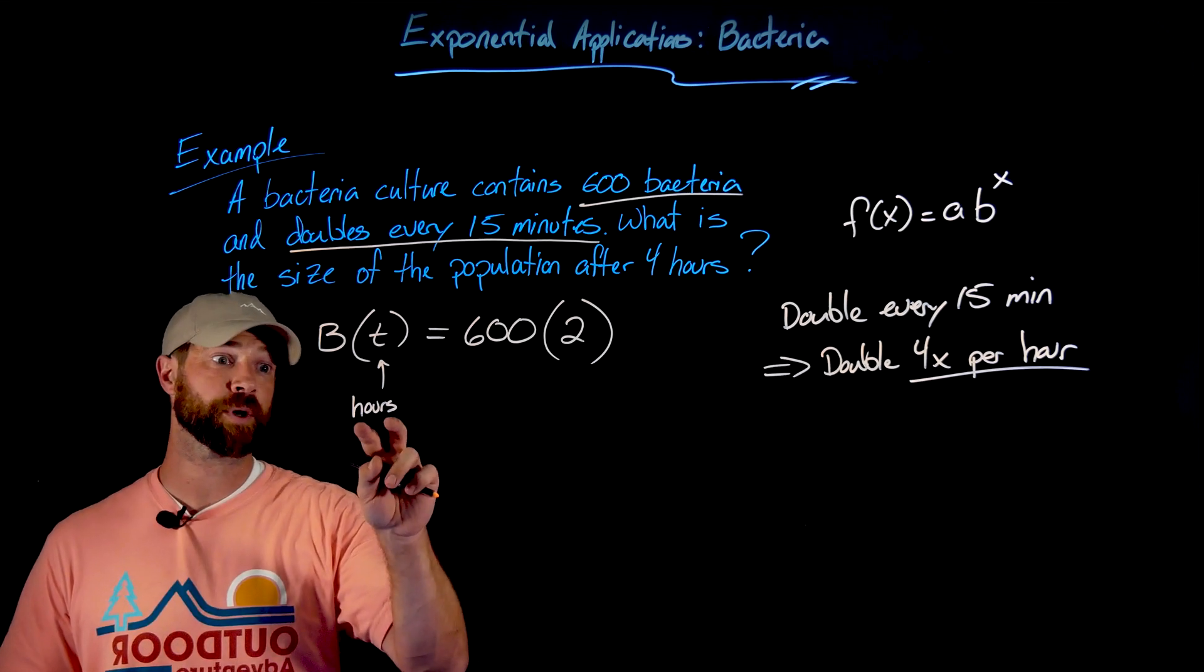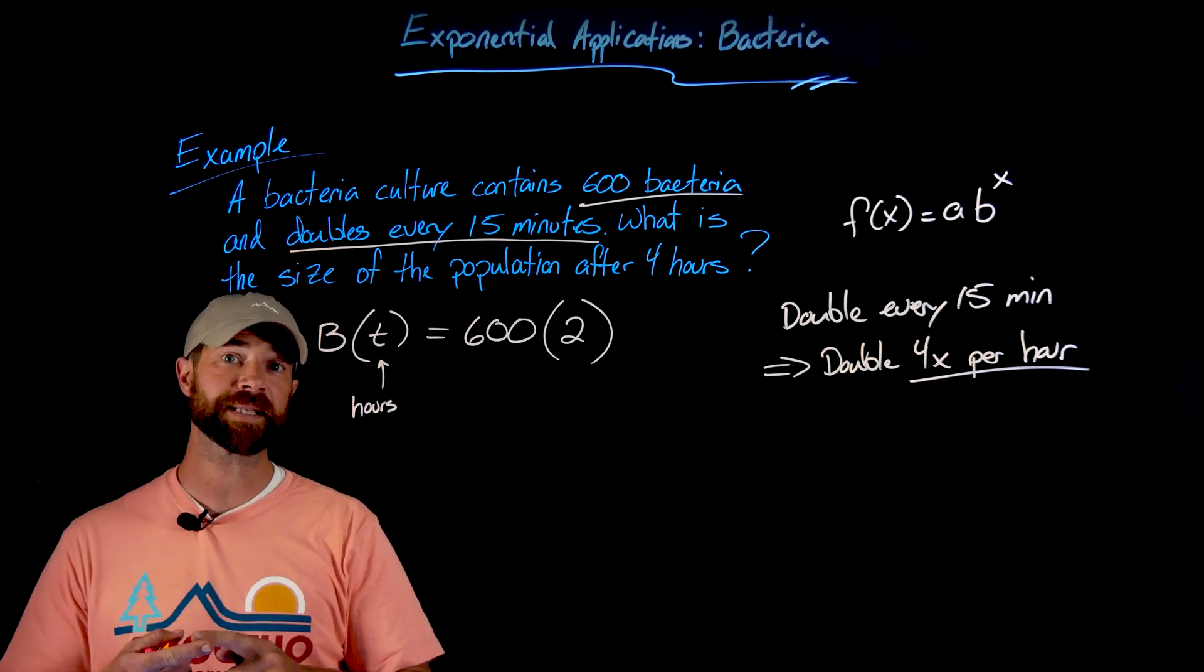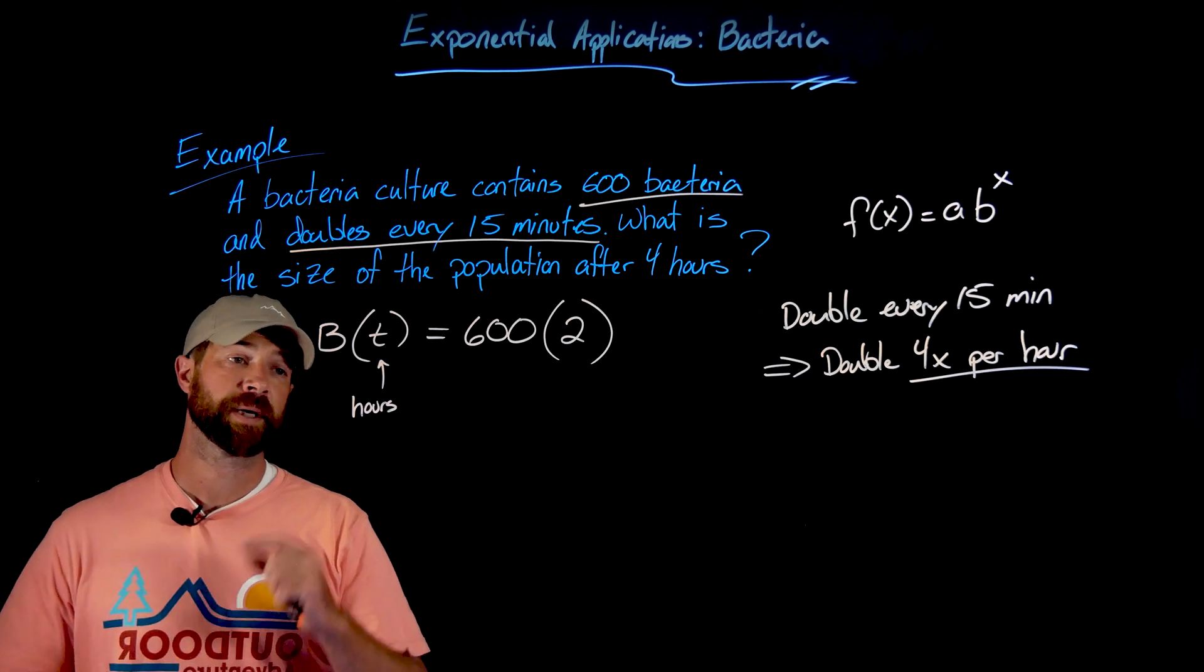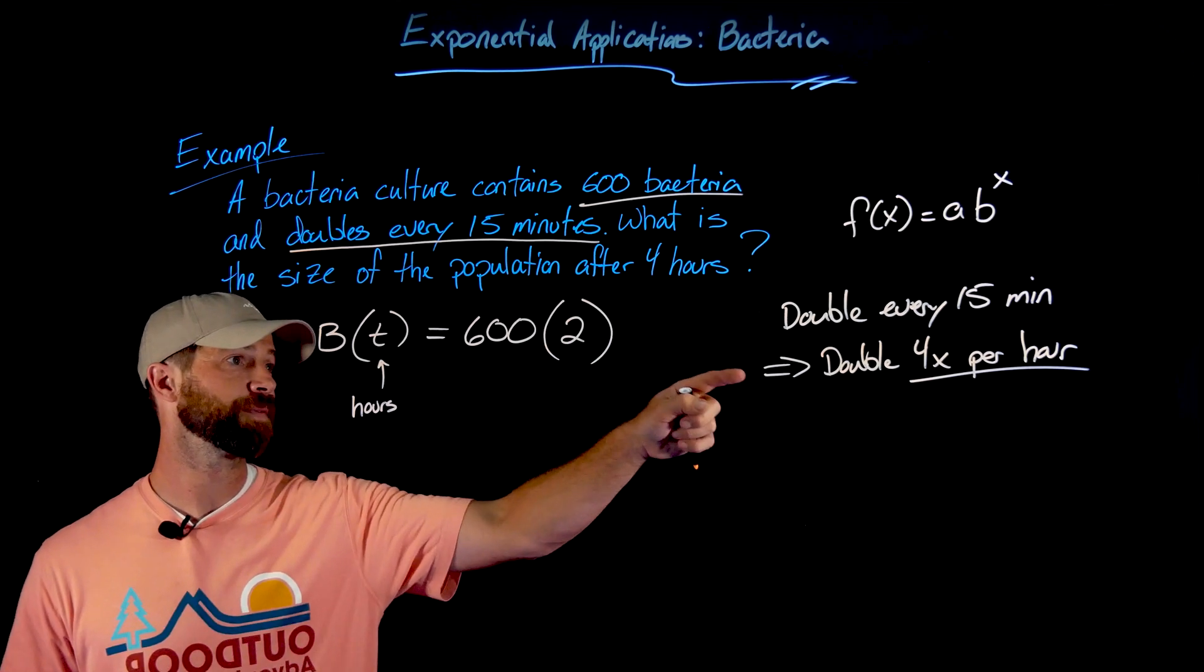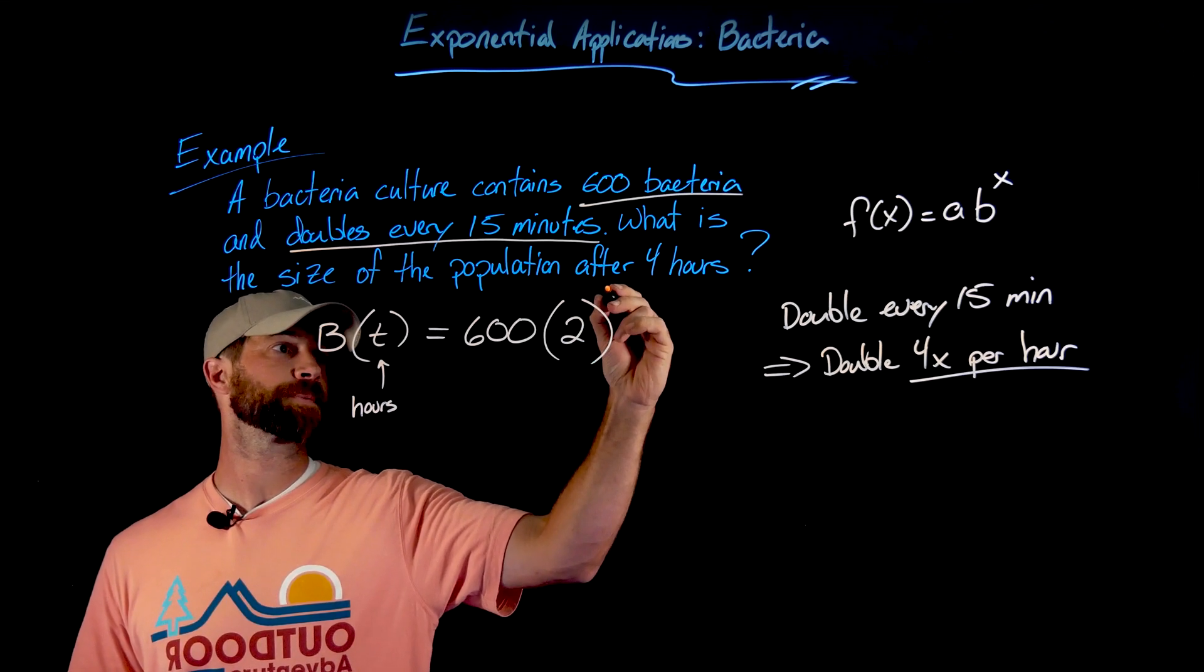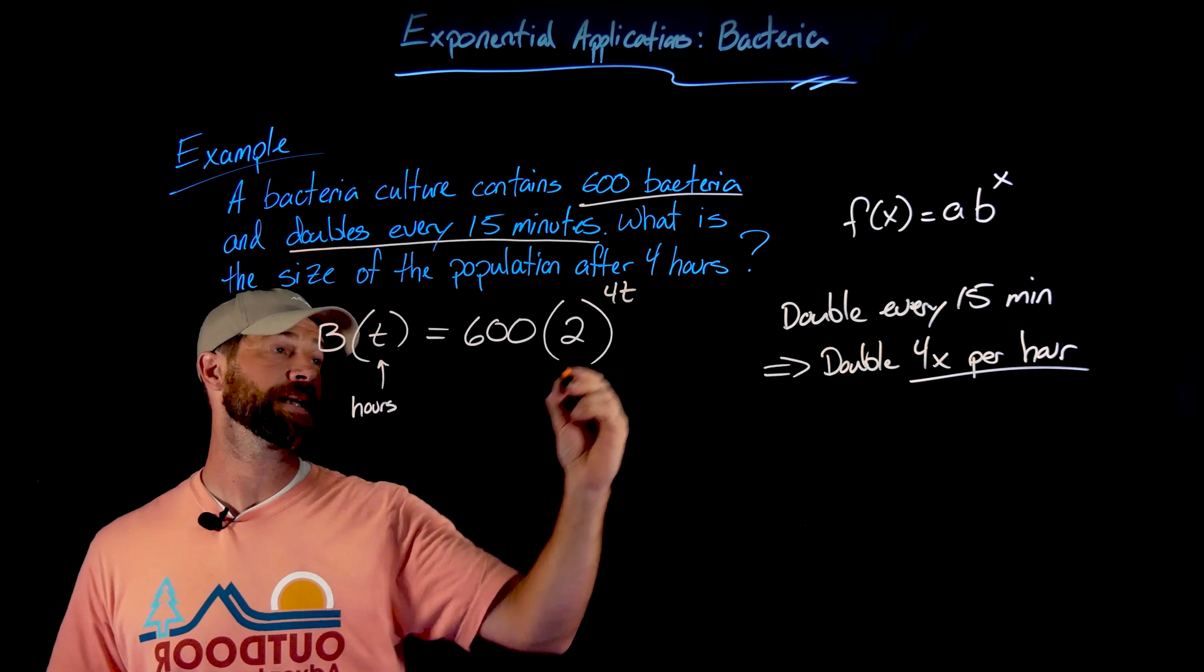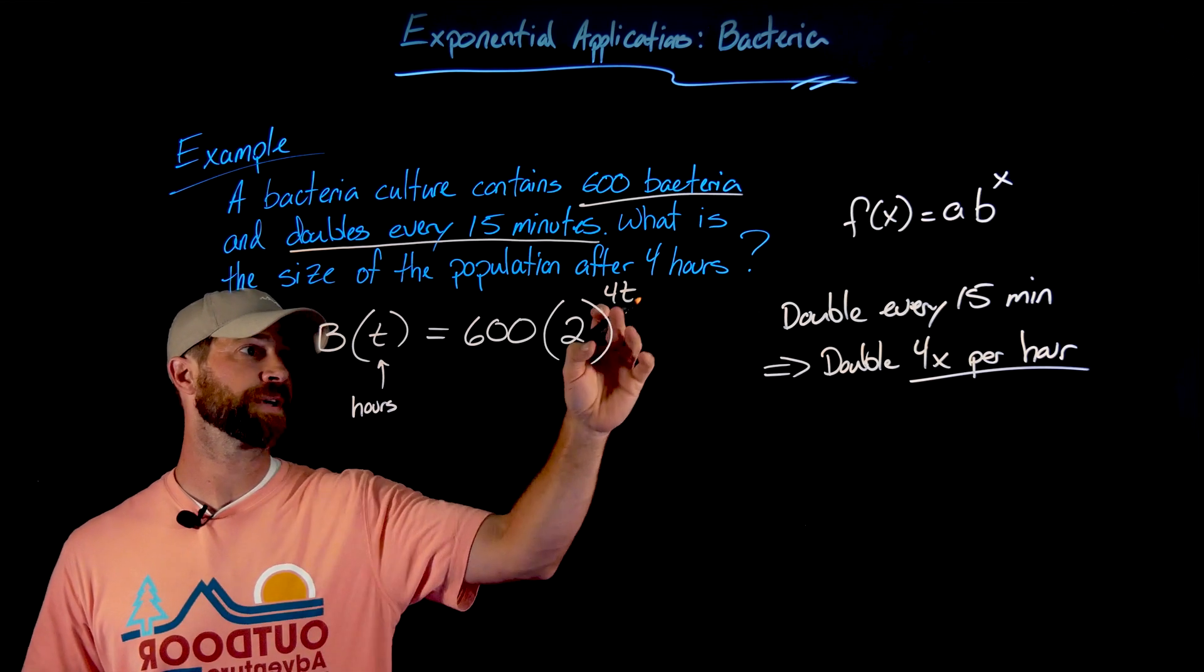Now this is where the change would be, whether I choose my input to be minutes or to be hours. But in this case, really important: since I'm doing hours and it doubles four times per hour, what I'm going to write up here in the exponent is four times t. And what this will do is for every hour I input, it will make sure this factor of two gets applied four times.